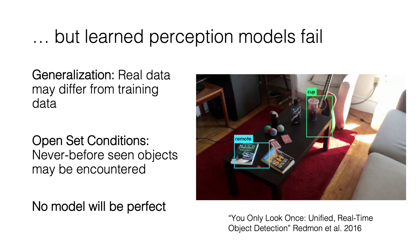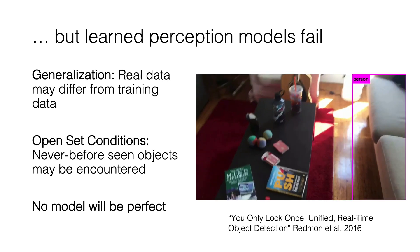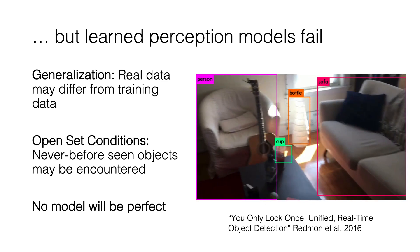Unfortunately, despite immense recent progress in machine learning for tasks like object detection, there are still a number of challenges associated with using these systems for navigation. Real scenes encountered during the operational lifespan of a robot might not be representative of model training data. Moreover, robots often experience open set conditions where entirely different object classes may be observed at runtime than those known at training time. If you've used systems like this before, you might be familiar with results like the ones shown here, where an off-the-shelf neural network behaves unpredictably, even in nominal, not adversarial conditions. Even as object detectors improve, we shouldn't expect perfection from a learned perception model over the lifespan of a robot, and neither should our algorithms.